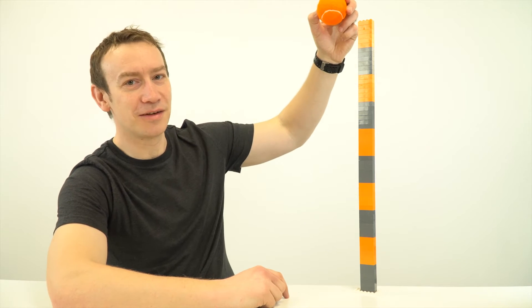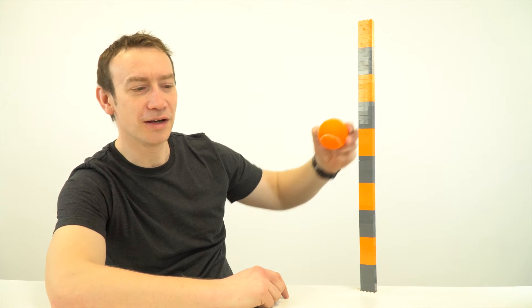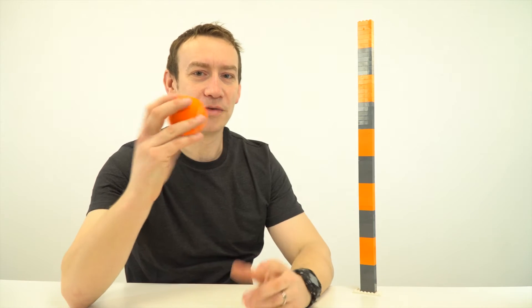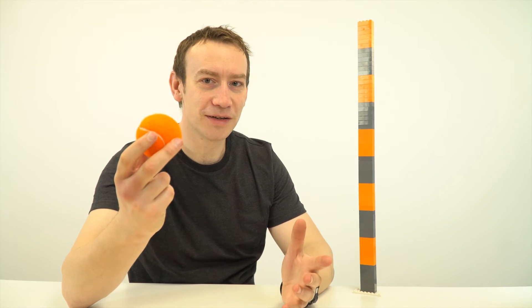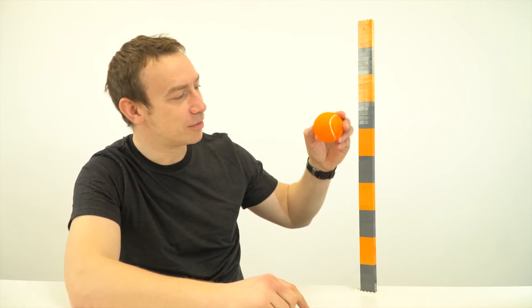It started at ten sections high. It ended up bouncing to five and a half sections high. So we can then say that this has got either an efficiency of 55% or also we could give it a number between zero and one, in this case 0.55.